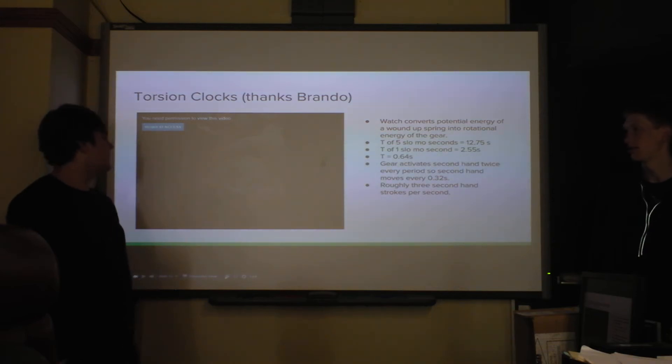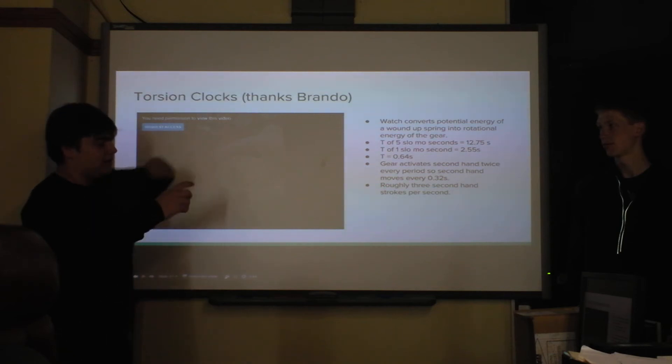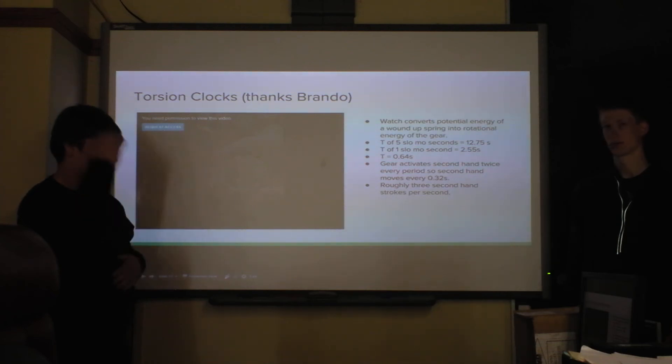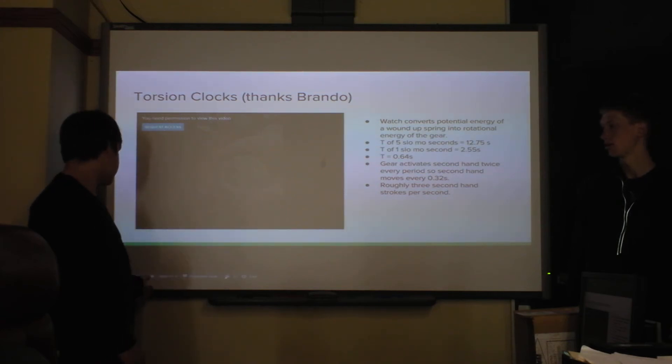Okay, so basically we had a video of the little torsion clock that Brando gave us. So basically, since the video won't work, there's like a little torsion pendulum inside that spins really fast. And every period it will move the second hand, it will hit the second hand. So the period of the torsion pendulum inside the clock is engineered so that every period is about a second. And that's just the evidence that we found using the video analysis over there.